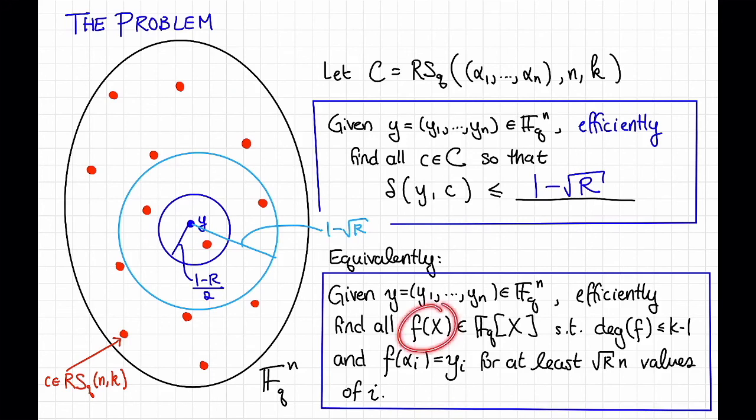That is, we want to find all polynomials f over fq, so the degree is at most k minus 1, and so that f of alpha i is equal to yi for at least square root of r times n values of i, where r once again is k divided by n, the rate of the Reed-Solomon code.